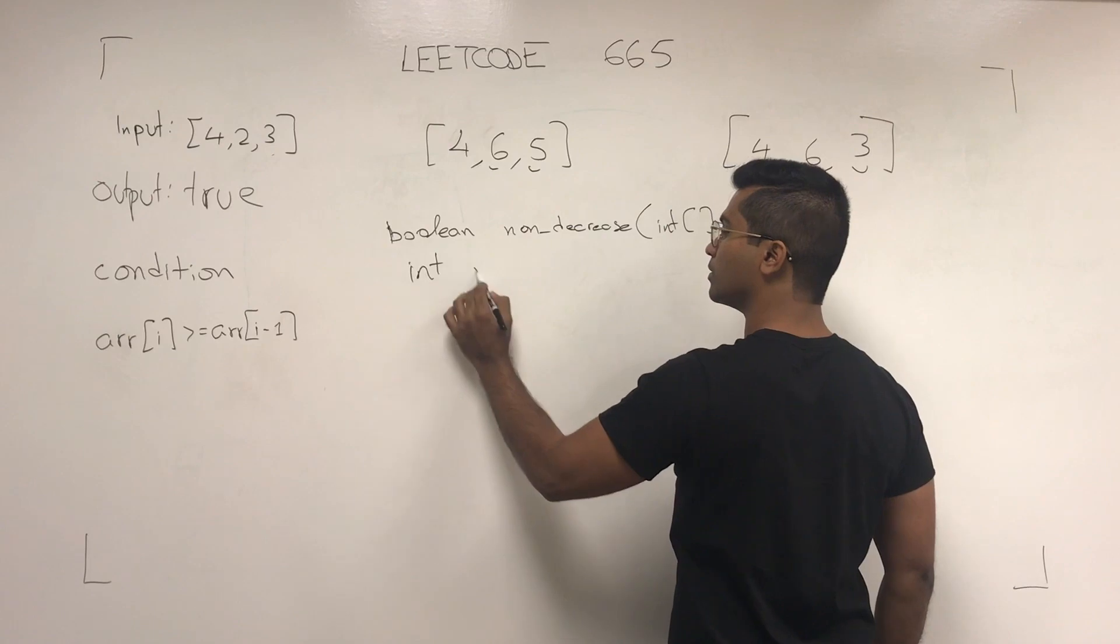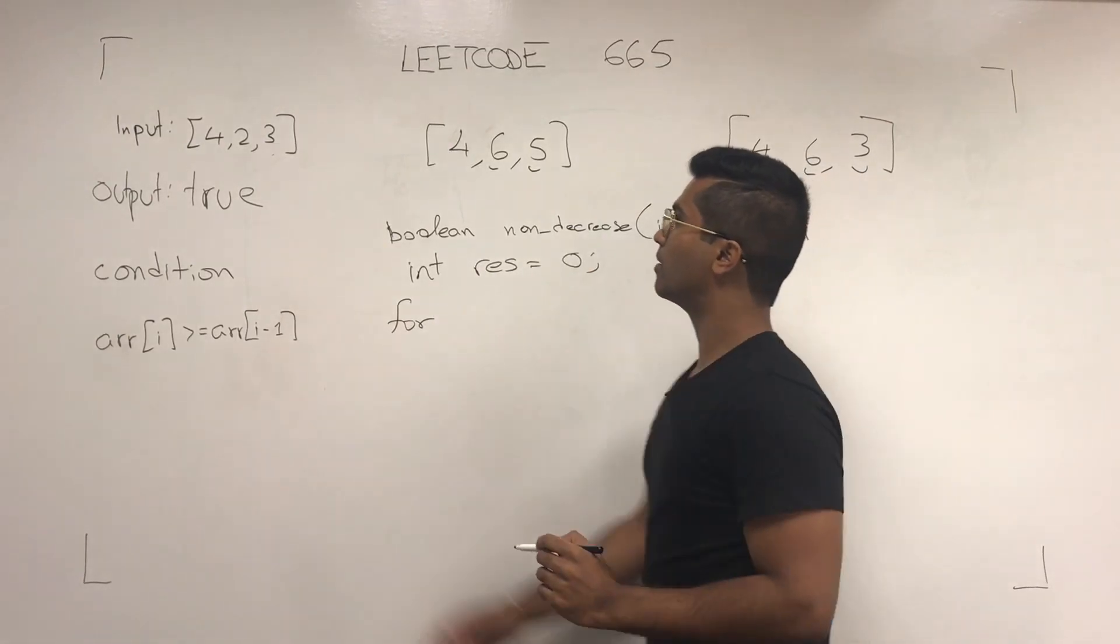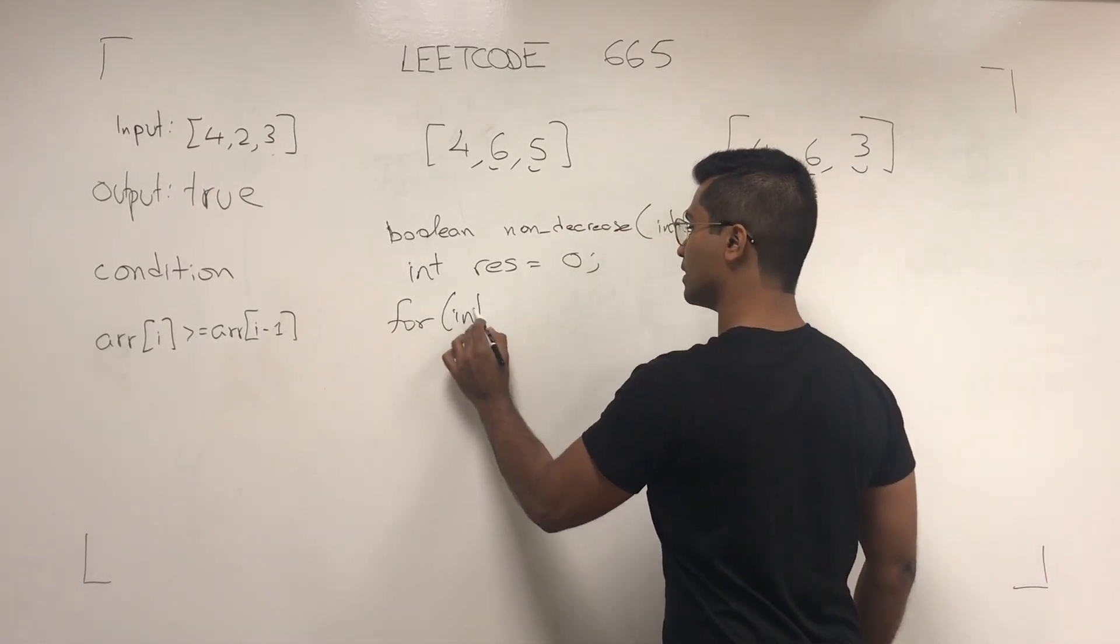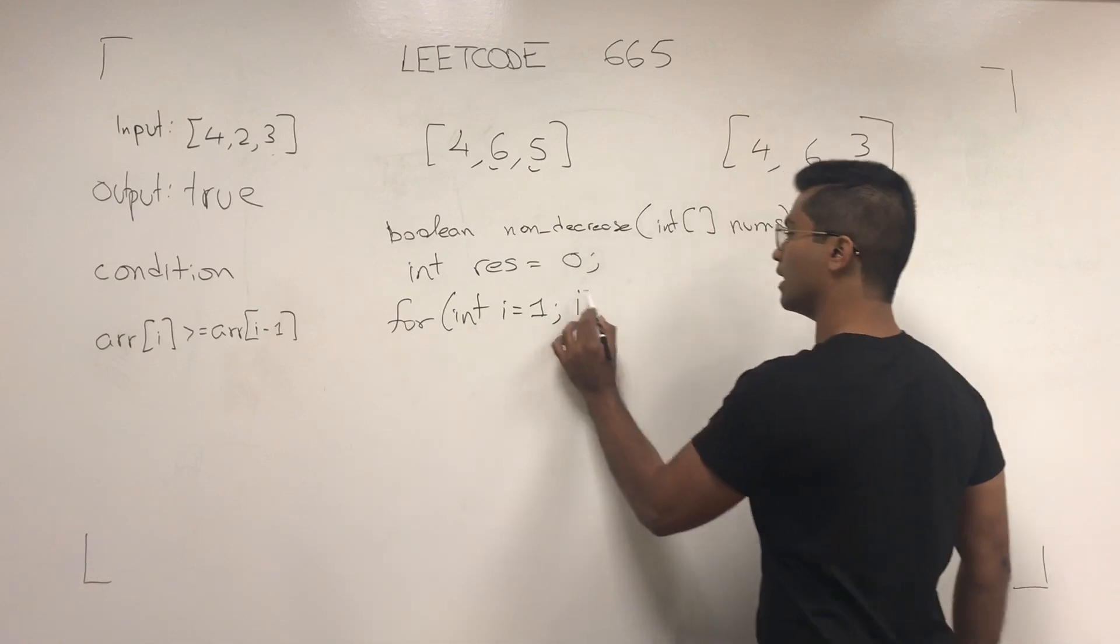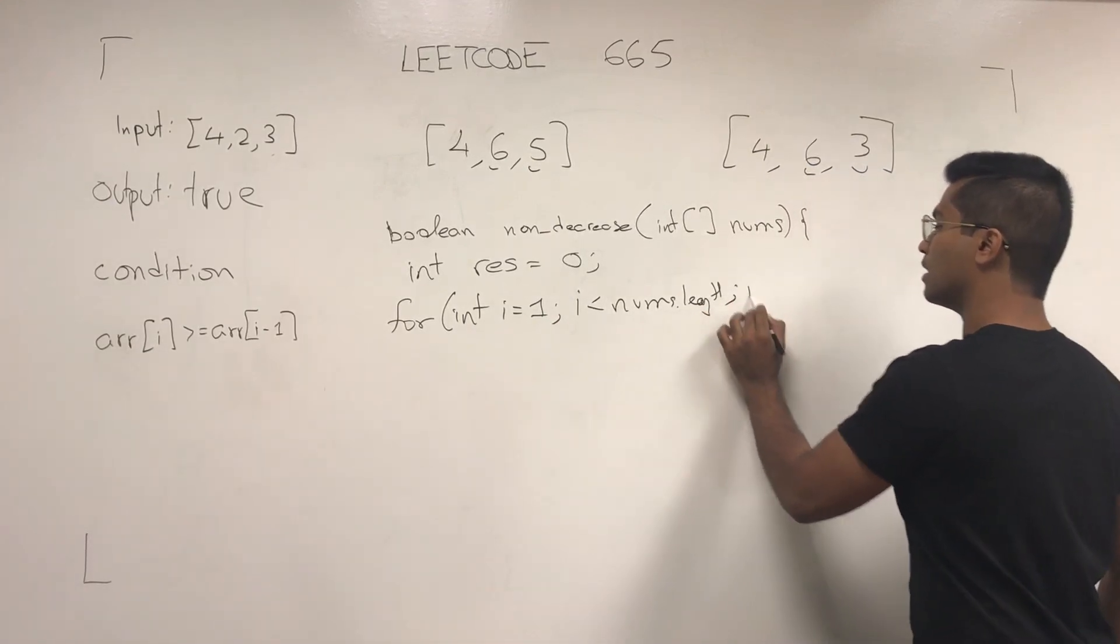And we result, we have a result. We'll start from the first index, not 0. So for int i equals 1, i is less than nums.length, i++.